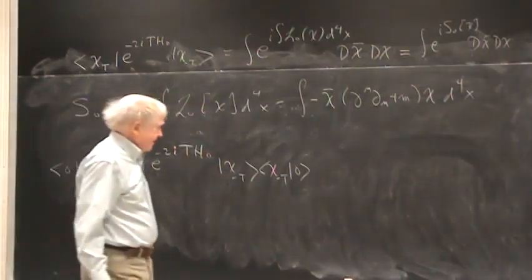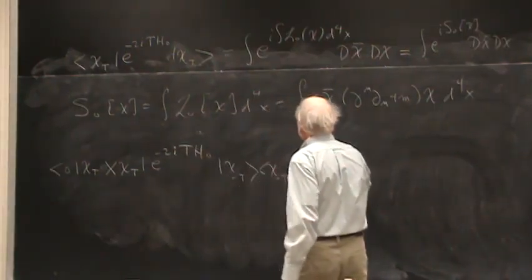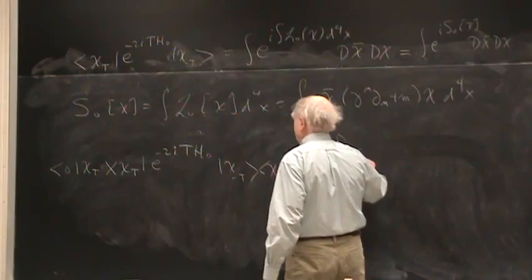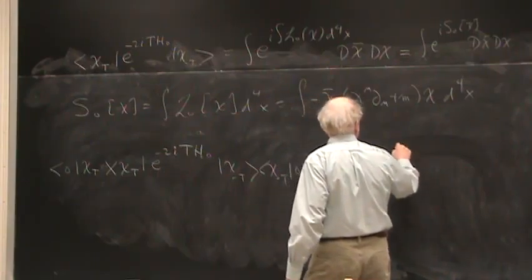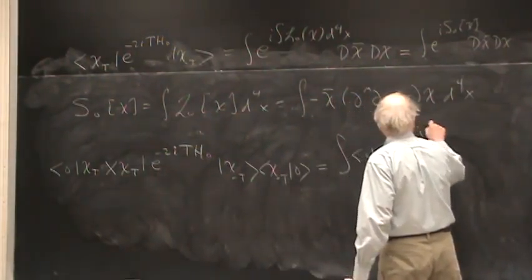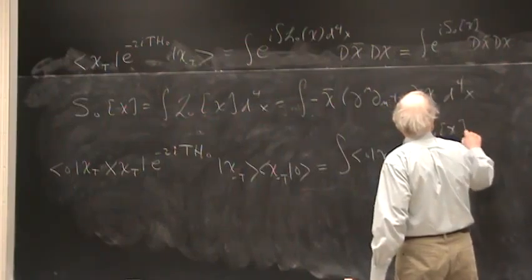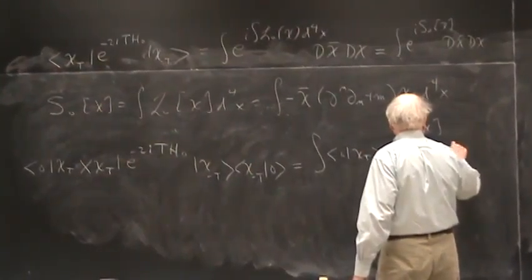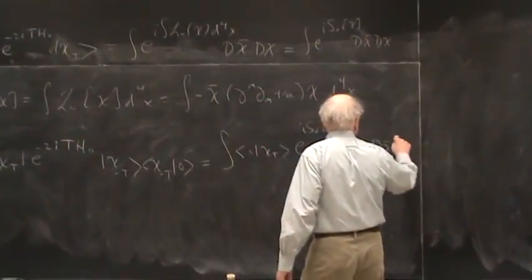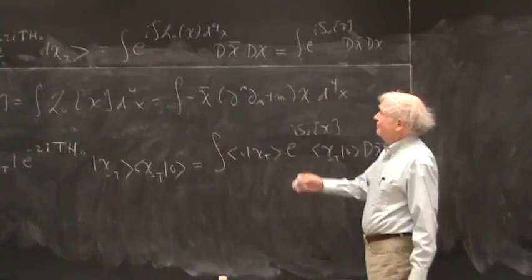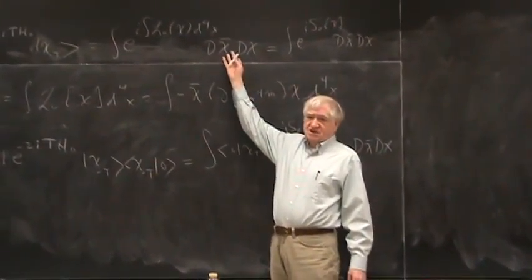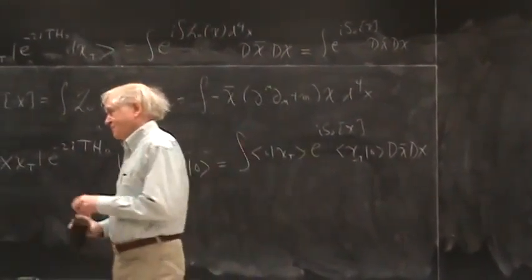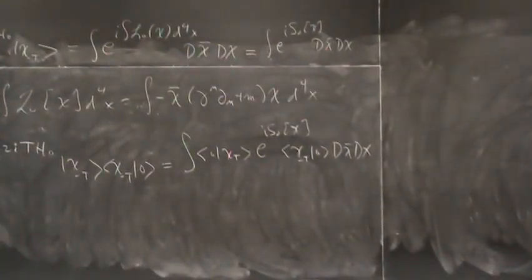On the right-hand side, there will just be an integral. I'm using bar and star interchangeably here. There might be some overall factor, but the factor is going to cancel when we do ratios.